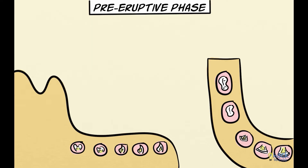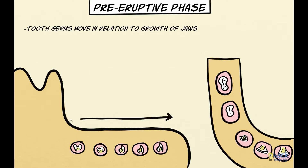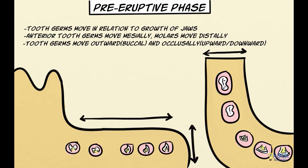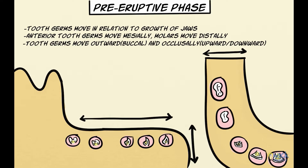The tooth germs grow and move in relation to the growth of the jaws in length, width, and height. Lengthening of the jaws causes anterior tooth germs to move forward or in a mesial direction, and molar tooth germs to move backward or in a distal direction. Simultaneously, the growth of the jaws in width and height moves the tooth germs outward or buccally, and upward in the case of the mandible or downward in the case of the maxilla.